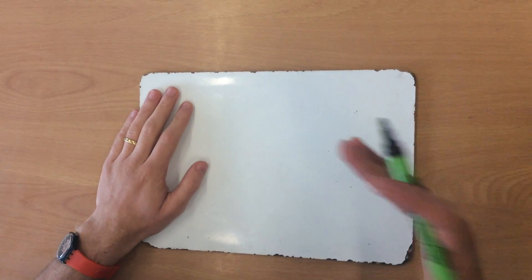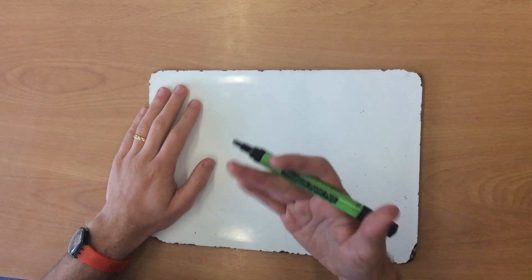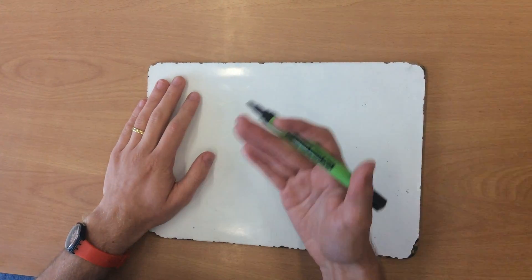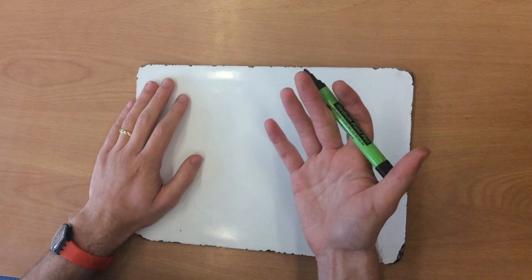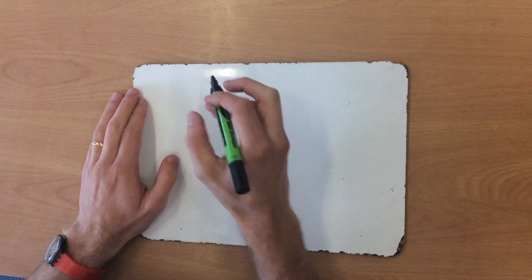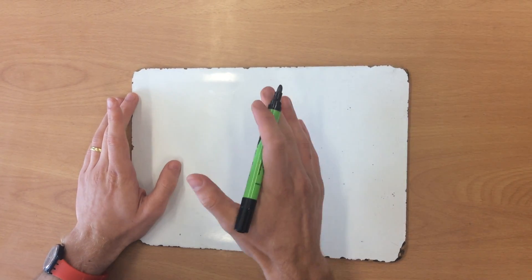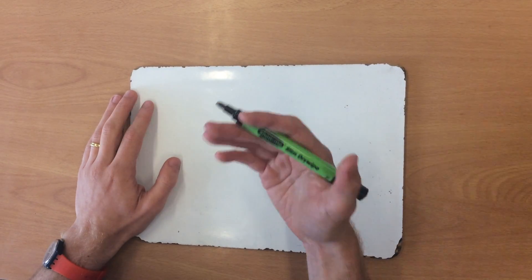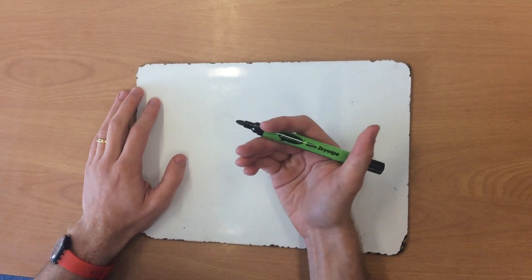Hello year fives, it's Mr. Conway here. Today's how-to guide will help you with your arithmetic paper. I'm going to focus on the calculations in questions 25 and 26, which involve multiplying a three-digit number by a two-digit number.